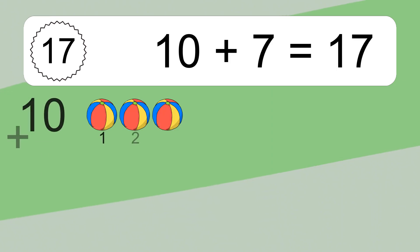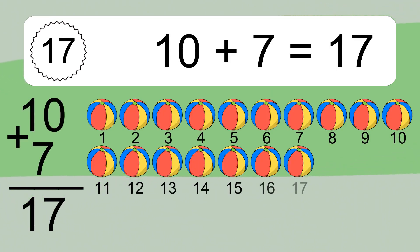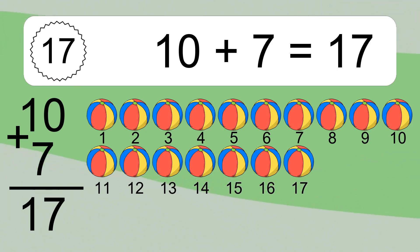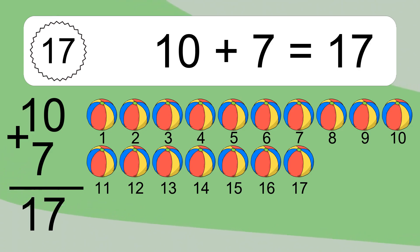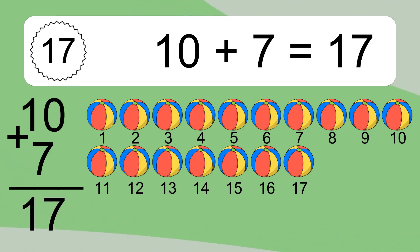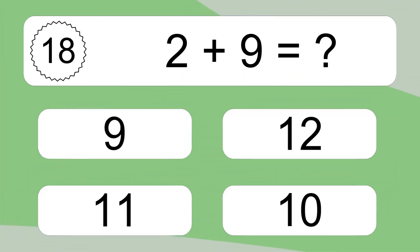Ten plus seven equals seventeen. Let's count it: one, two, three, four, five, six, seven, eight, nine, ten, eleven, twelve, thirteen, fourteen, fifteen, sixteen, seventeen. Two plus nine equals what?